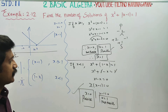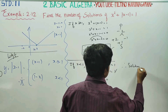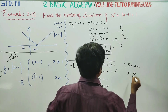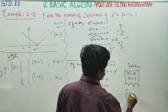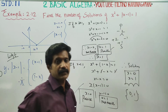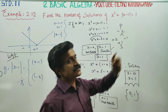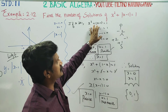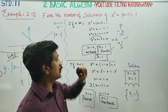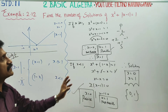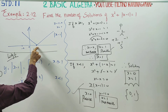Therefore, the solution for this equation is: the solution set is {0, 1}. An important point: modulus of x minus 1 has two phases — one is x minus 1, when x is greater than or equal to 1, and the other is 1 minus x, when x is less than 1.